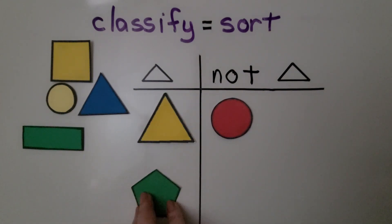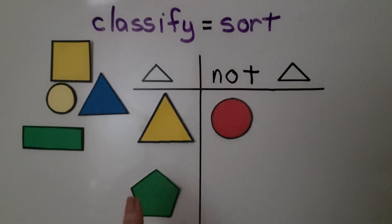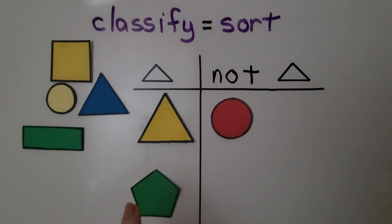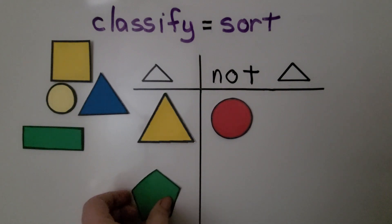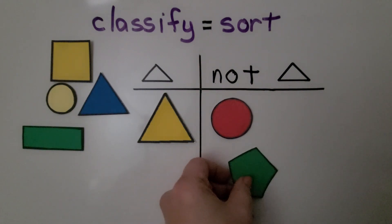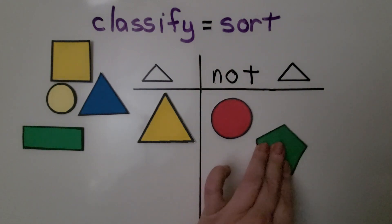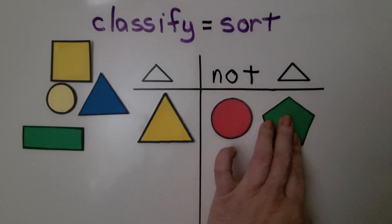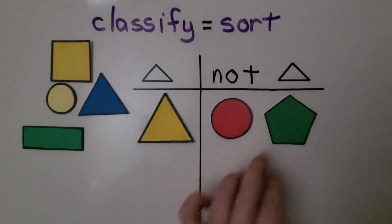Is this a triangle? It has one, two, three, four, five sides. No, that has too many sides. That's not a triangle — that's a pentagon.